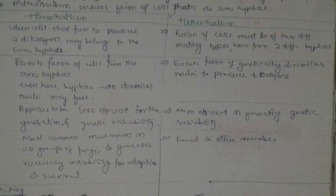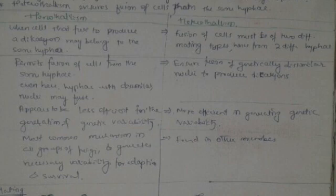In homothalism, even hyphae with dissimilar nuclei may also fuse, but it appears to be less efficient in generating genetic variability, whereas heterothalism is more efficient in generating genetic variability. Homothalism is the most common mechanism across all groups of fungi, generating the necessary variation for adaptation and survival, while heterothalism is less commonly found in fungi.